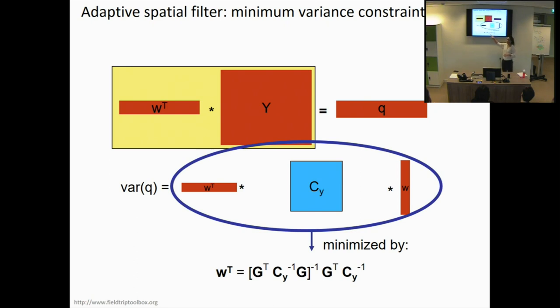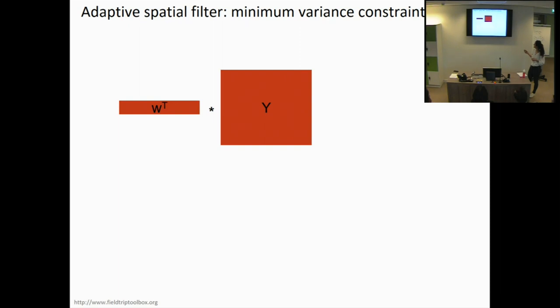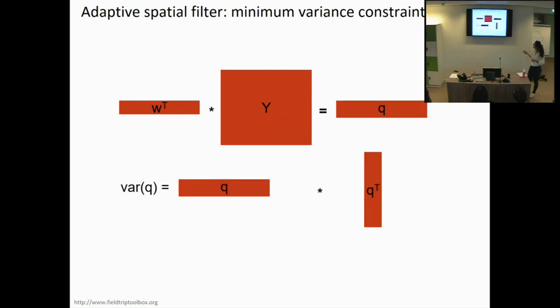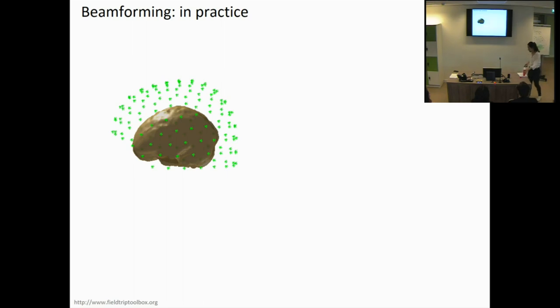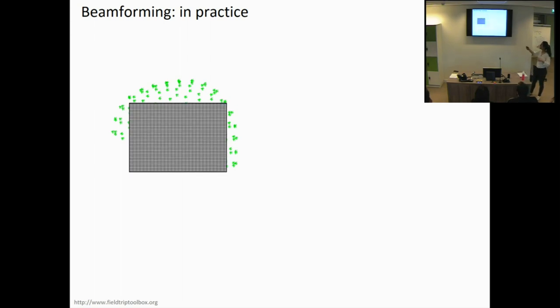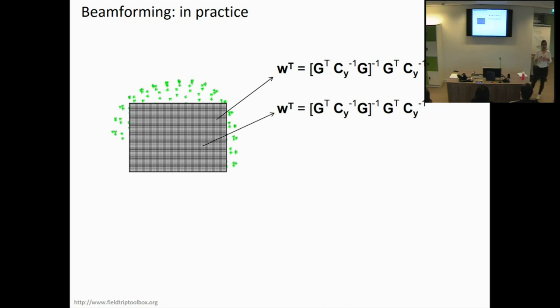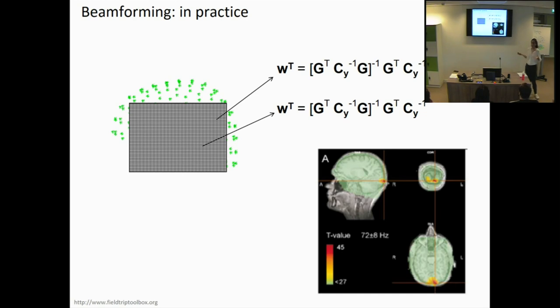Given the two constraints, there is a closed-form formula to estimate the spatial filters while minimizing variance at the source. The derivation is given step by step in Van Veen et al. (1997). The key insight is that the spatial filters can be computed from just the gain matrix G (forward model) and the covariance of the data — both of which we can estimate. This equation also satisfies the unit gain constraint. We then repeat this for every grid point in our 3D search space to get a spatial distribution of source strength, which can be contrasted across conditions.